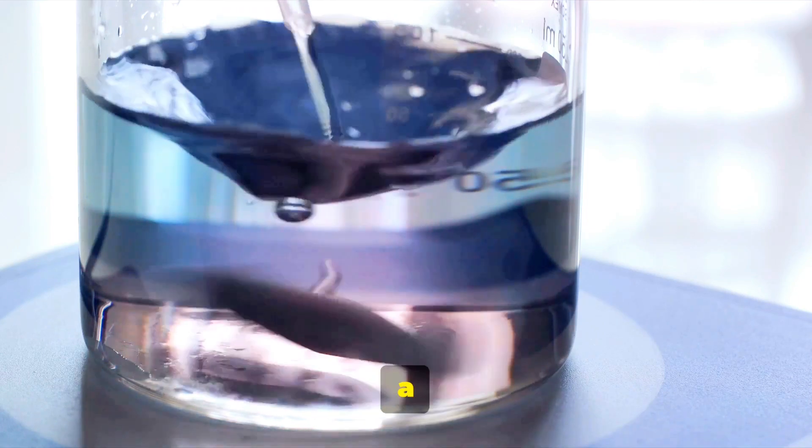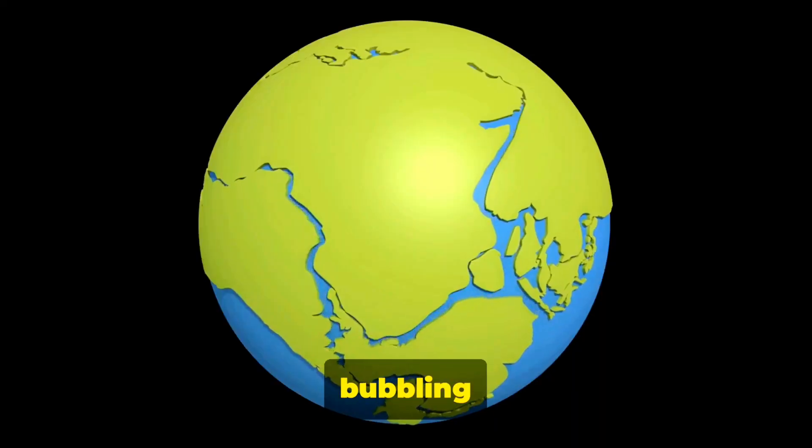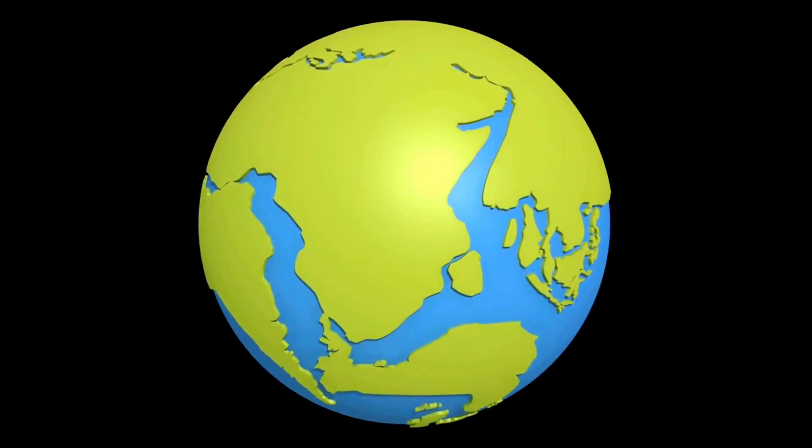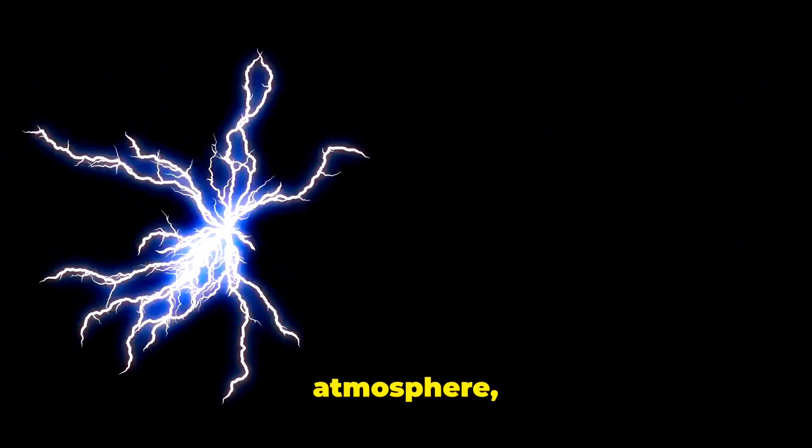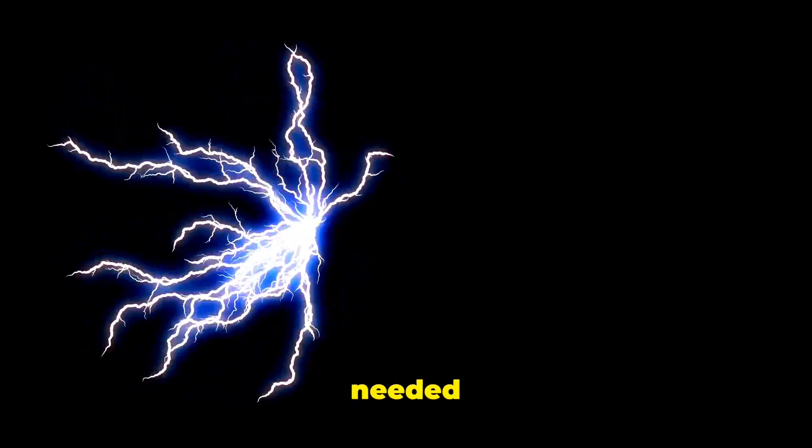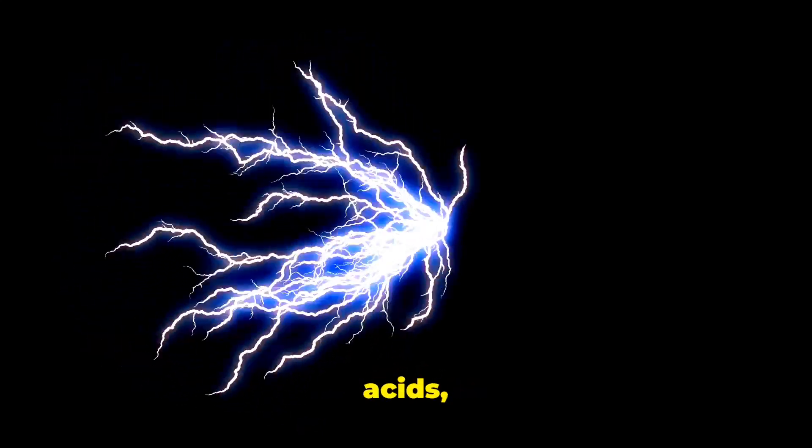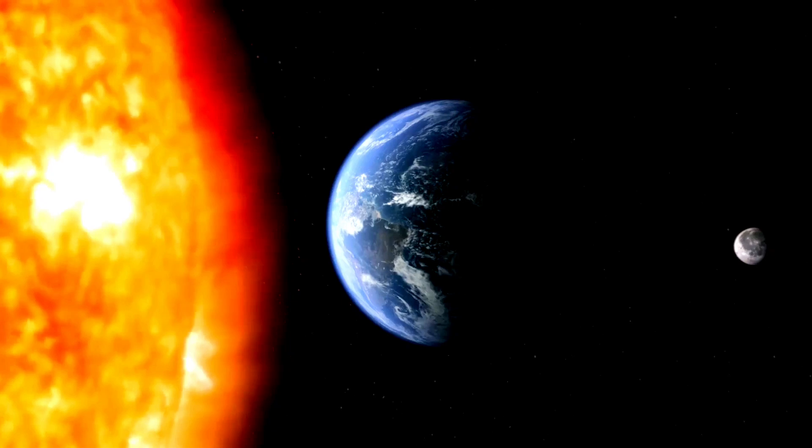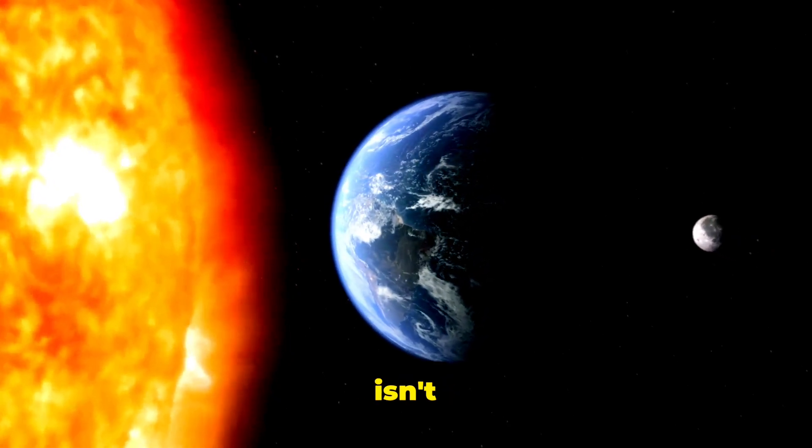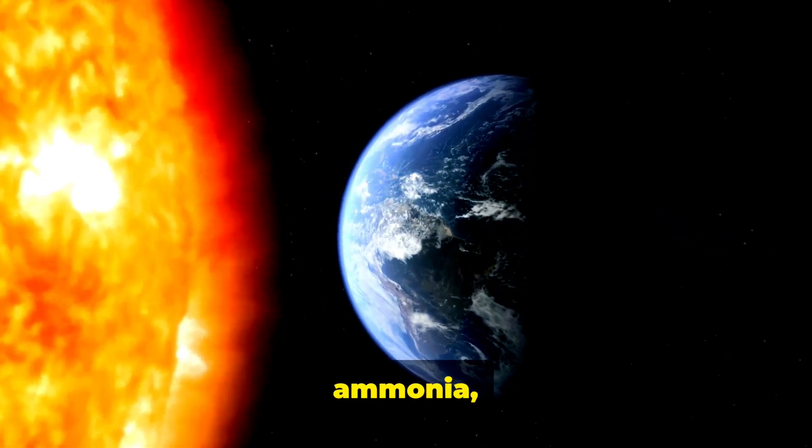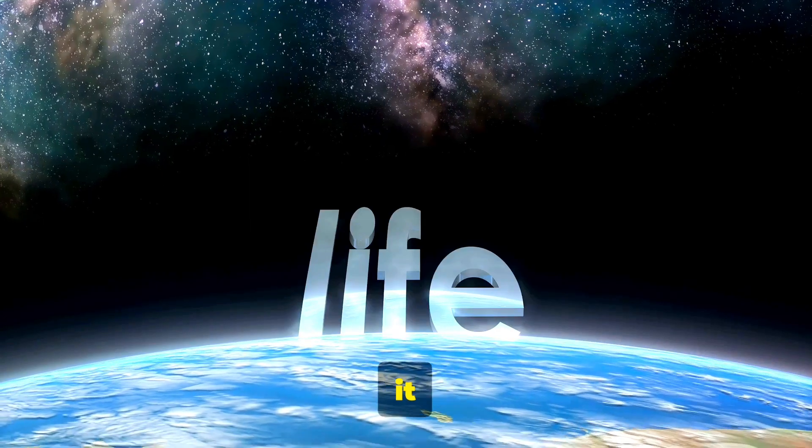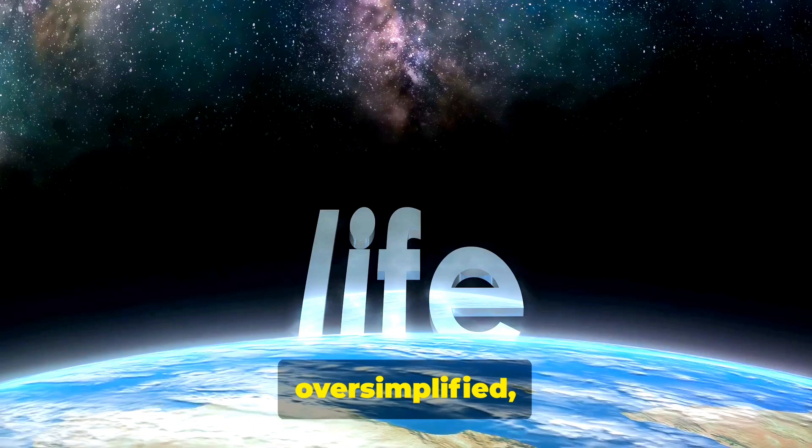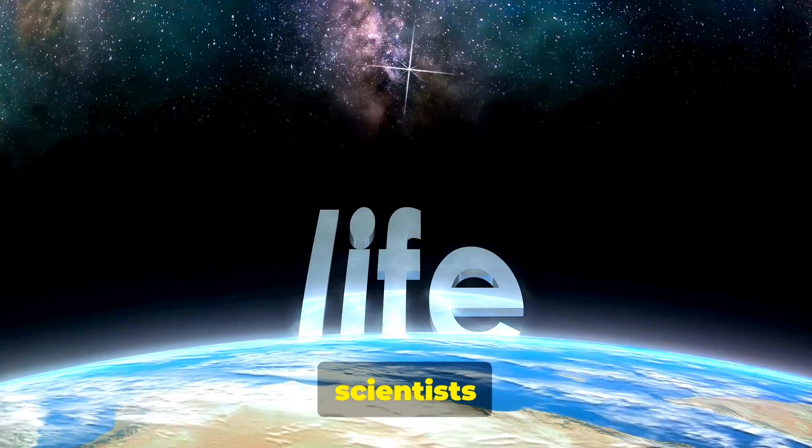Imagine a vast ocean, a soup kitchen of sorts, simmering and bubbling under the heat of the young sun. No chef was stirring this pot, but there was a catalyst at work. Lightning, a common occurrence in the Earth's early atmosphere, provided the energy needed for these molecules to react and form amino acids, the building blocks of life. It's like a grand cosmic recipe, isn't it? Take a dash of methane, a sprinkle of ammonia, a pinch of hydrogen, mix it all in a vast ocean, and heat it up with a bolt of lightning. This might sound oversimplified, but that's essentially what scientists believe happened.